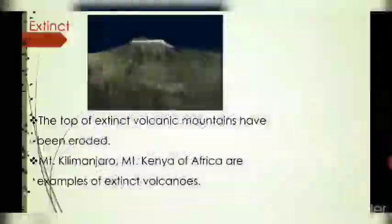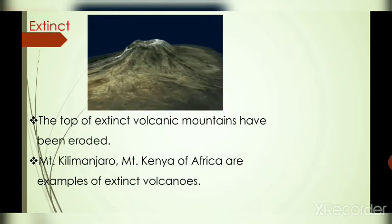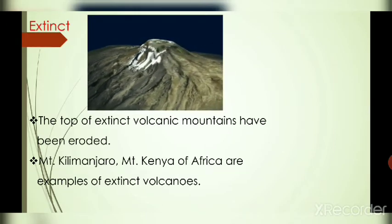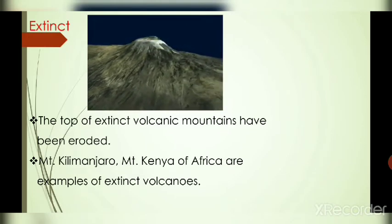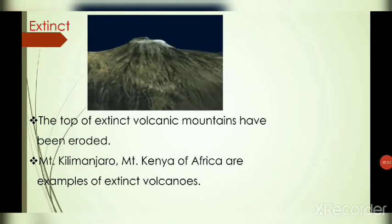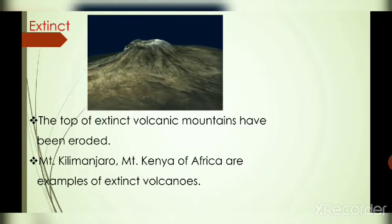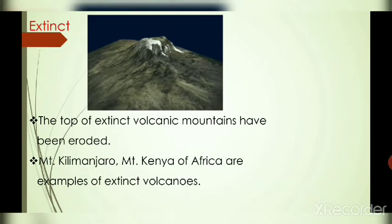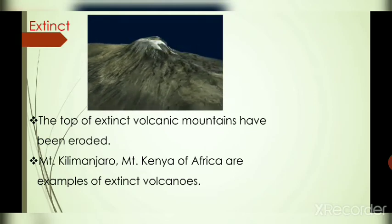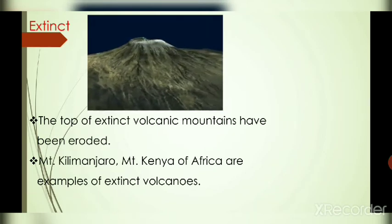Next is extinct volcano. The top of an extinct volcanic mountain has been eroded. The active volcano will be huge, but it is eroded over time. Examples of extinct volcanoes are Mount Popa of Myanmar, Mount Kilimanjaro, and Mount Kenya of Africa. Active volcanoes erupt frequently. Dormant volcanoes have shown no activity for many years but may become active — also called sleeping volcanoes. Extinct volcanic mountains have been eroded and are no longer active.